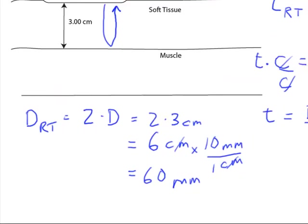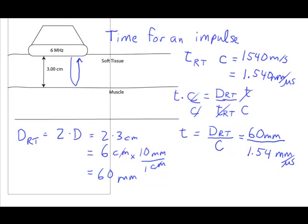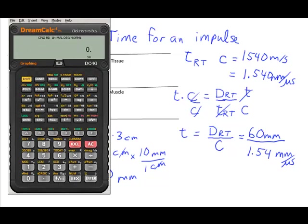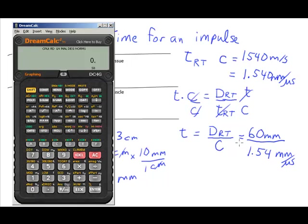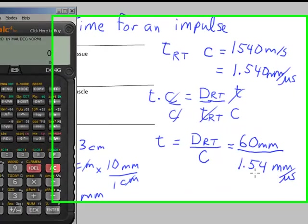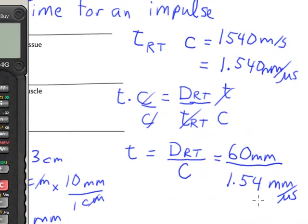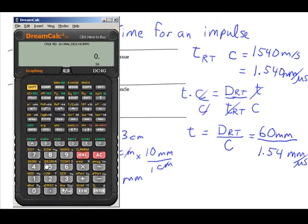I'm just going to do that calculation on a calculator. If I take 60 mm divided by 1.54 mm per microsecond, that's 60 divided by 1.54.